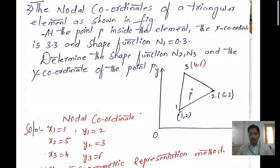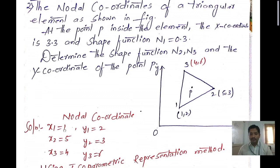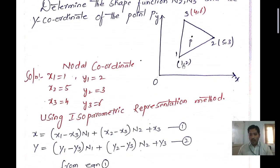Node 1 has coordinates (1, 2). At node 2 the values are (5, 3). At node 3 the values are (4, 6). So we can write: x1=1, y1=2, x2=5, y2=3, x3=4, y3=6.